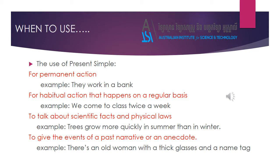We also have scientific facts and physical laws that are unchanging. The simple present is the correct verb tense to use when we are discussing or declaring scientific facts. For example, 'The sun rises in the east, the sun sets in the west.' These are unchanging, and so the simple present is the verb tense of choice. There may also be the requirement to talk about past narratives or an anecdote that is in a sense atemporal — it transcends time — and so in these cases, the present simple is the verb tense of choice.